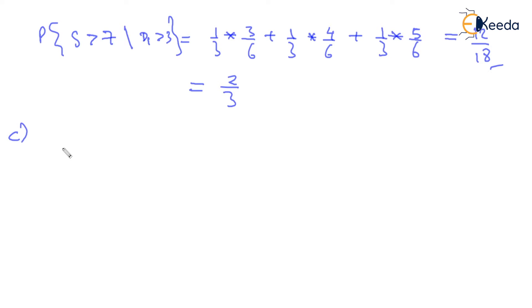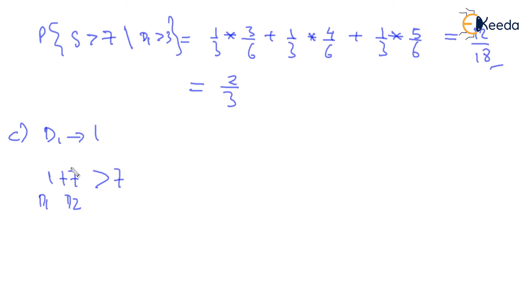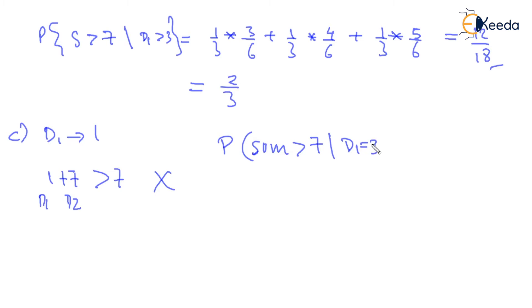Option C is when the first outcome was 1, so d1 = 1. For the sum to be greater than 7, d1 = 1 requires the second number to be at least 7, because 1 + 7 = 8 > 7. But can d2 be 7? The answer is no — a die only goes up to 6. So, the probability that the sum is greater than 7 given d1 = 1 is 0.